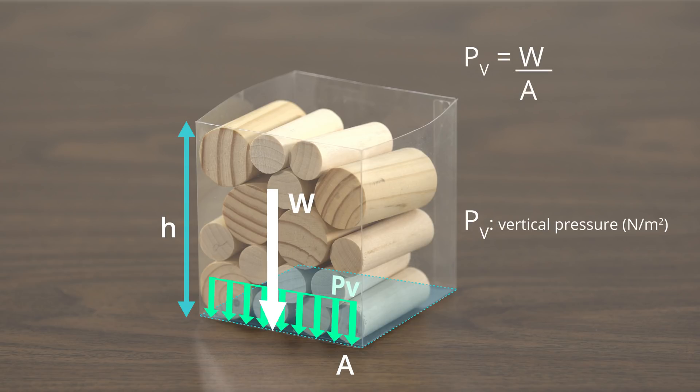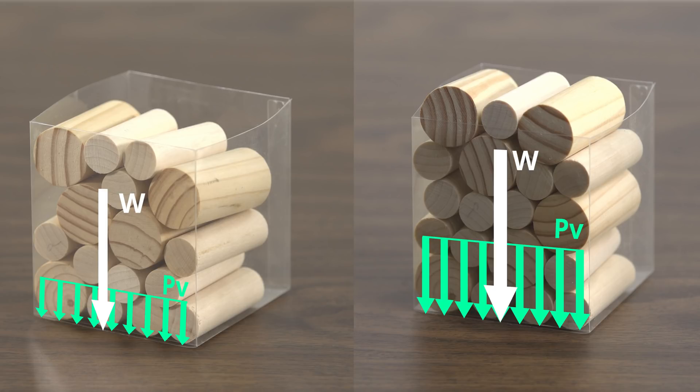To calculate the vertical pressure PV on the bottom of the container, we simply divide this weight by the base area. Substituting in our earlier equation for weight and cancelling the area term that appears in both the numerator and denominator produces a simple equation. This equation tells us that the vertical pressure PV is equal to the mass density of the material times the acceleration of gravity times the height of the material above the point we are considering. Notice that if we increase the height of the material, the pressure increases.